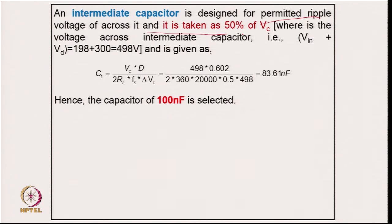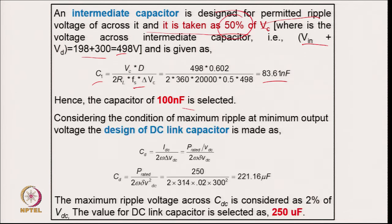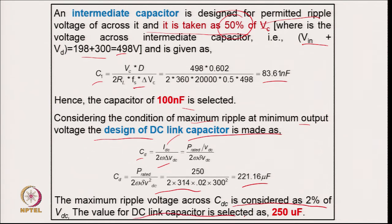The intermediate capacitor is designed for a permitted ripple of 50 percent of the capacitor voltage. The capacitor voltage is V_in + V_out = 498 V for the given specifications. Putting in values gives 83.61 nF; 100 nF is selected to ensure ripple stays well below 50 percent. For the DC link capacitor, using C_d = I_dc / (2 × ω × ΔV_dc), and selecting slightly higher than calculated, the DC link capacitor is 250 μF.